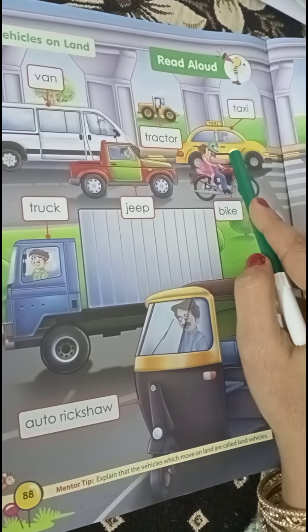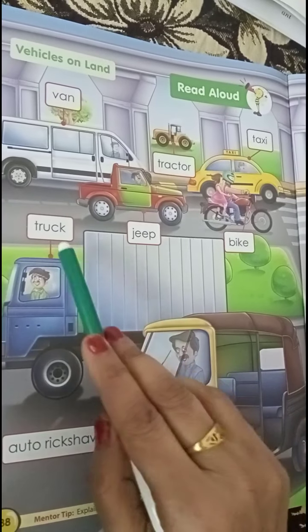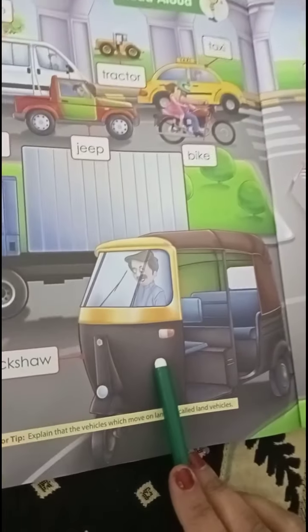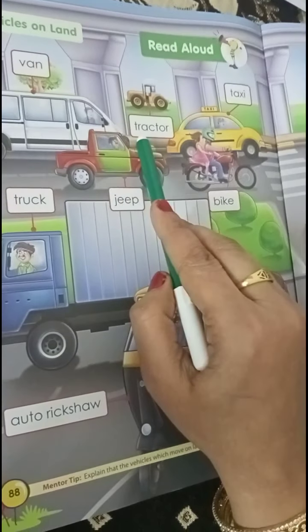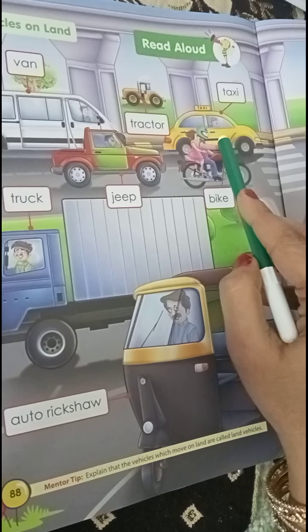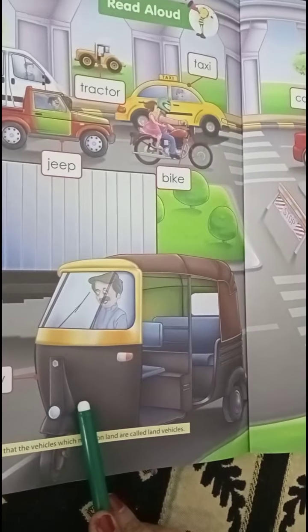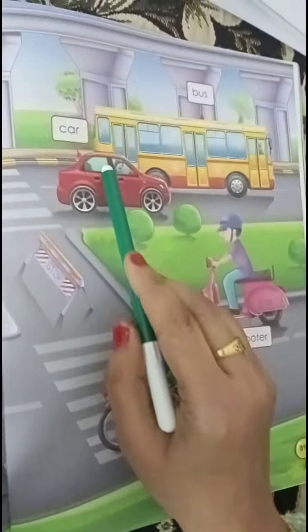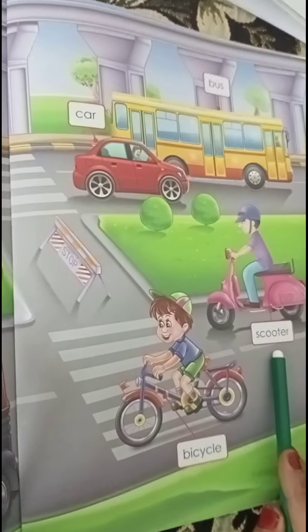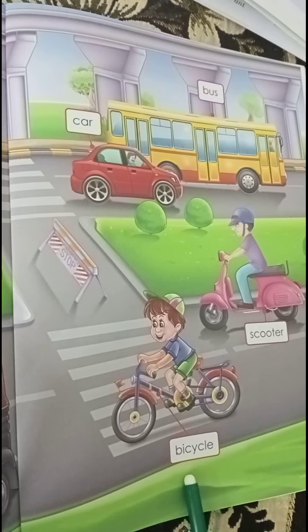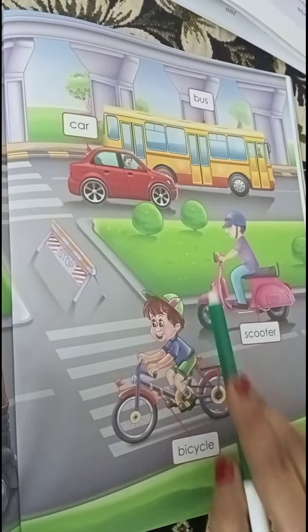Tractor, taxi, bike. Can you see? Jeep, truck — this is a truck — auto rickshaw. I'll read the names again: van, tractor, taxi, bike, jeep, truck, and auto rickshaw. Here: car, bus, scooter, bicycle.